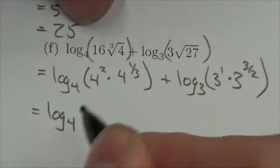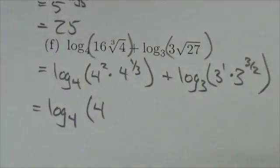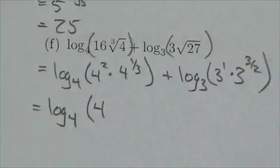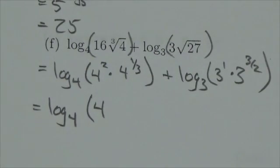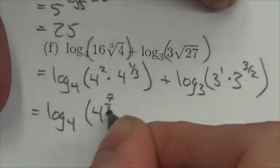So now this is log base 4 of, well I've got a power of 4 here, I just got to add the exponents. When I multiply two powers I add the exponents. So 2 plus 1/3. Okay well 2 would be 6/3 plus 1/3 is 7/3.